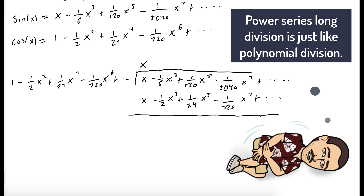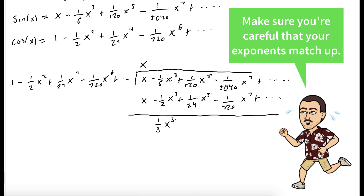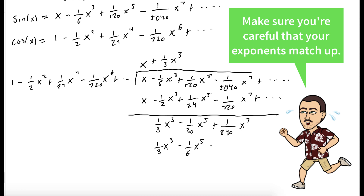When we subtract, we get one third x to the third minus one thirtieth x to the fifth plus one eight-hundred-fortieth x to the seventh plus more terms. How many times does one go into one third x to the third? One third x to the third many times. We take one third x to the third and multiply it to each term in the Maclaurin series of cosine, then subtract them off again. We continue this process until we get four terms.